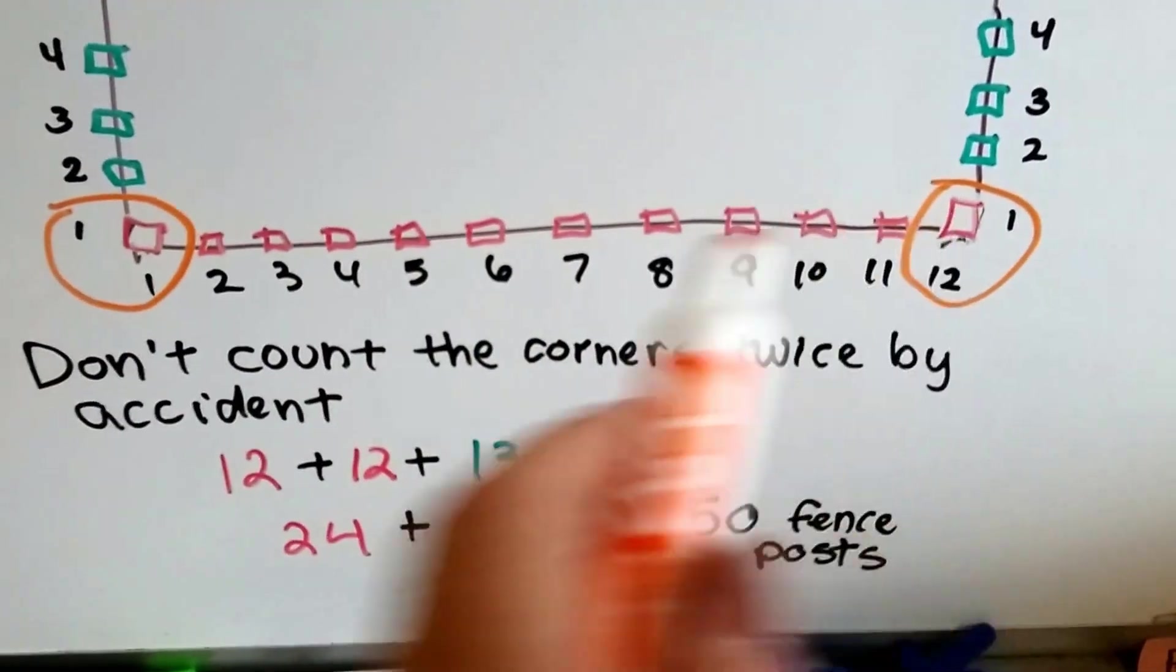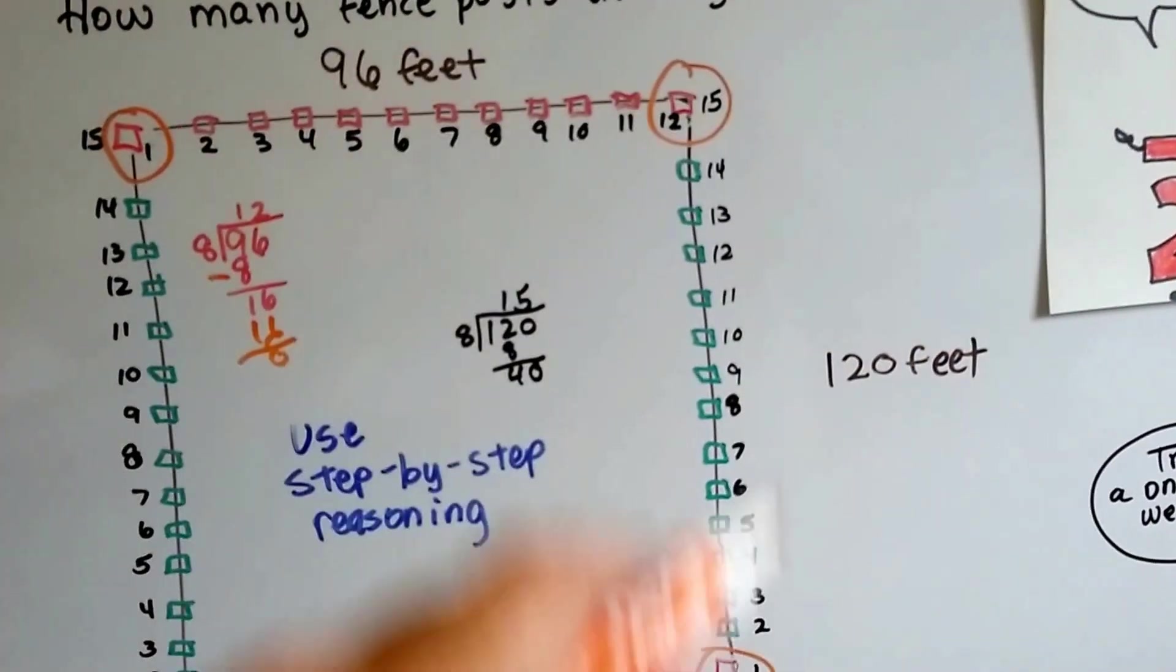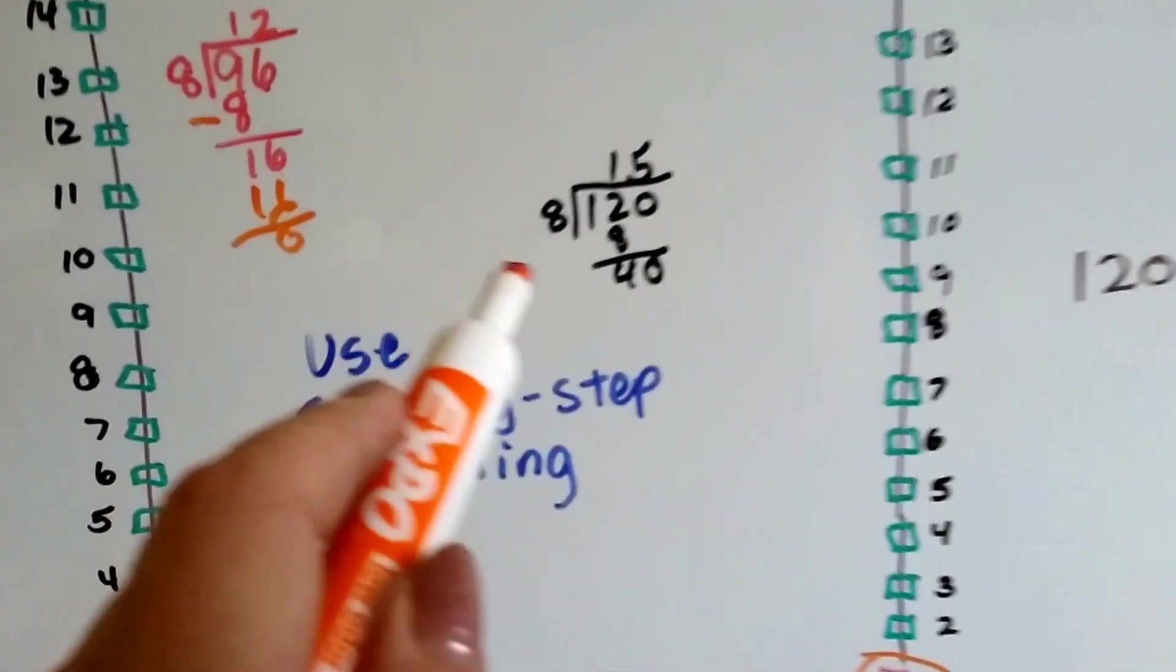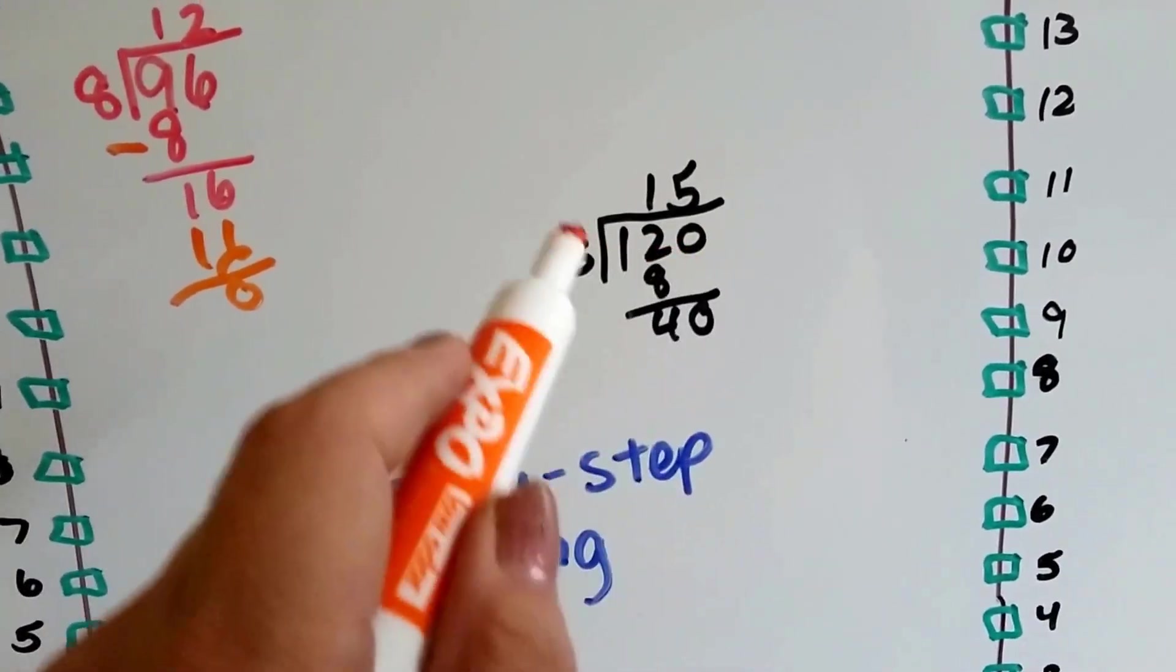So, I did the same thing at the bottom. I've got one through twelve for the fence posts. But then I had to figure out the hundred and twenty foot side. So, I put eight into a hundred and twenty to see how many times it would go in. And I got fifteen.